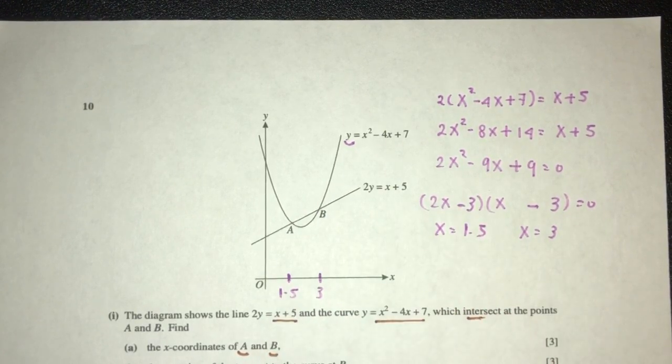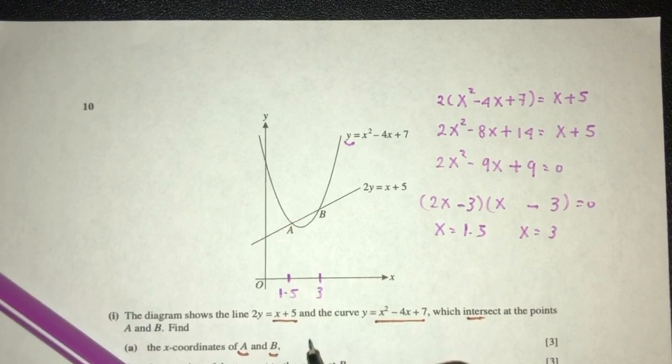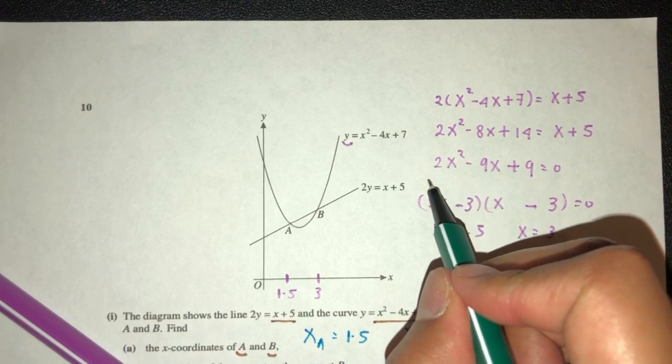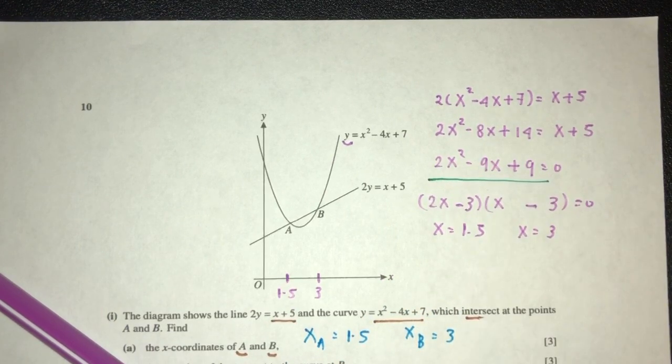Obviously, because 1.5 comes before 3, this will be the point A, and this will be the point B. So the x value of A will be 1.5, and the x value of B will be 3. Again, if you guys don't know how to solve a quadratic equation, you can always use the formula to solve for the value of x.